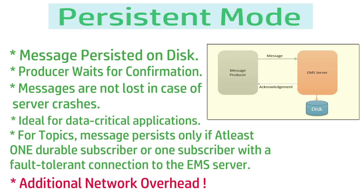Another key point: in persistent mode an acknowledgement is returned for every message. If you have hundreds of thousands of messages being sent, an equal number of acknowledgements return to the producer — creating additional network overhead and impacting throughput. You must carefully decide whether persistent mode is appropriate. It should only be used when data is highly critical and you cannot afford to lose even a single message.